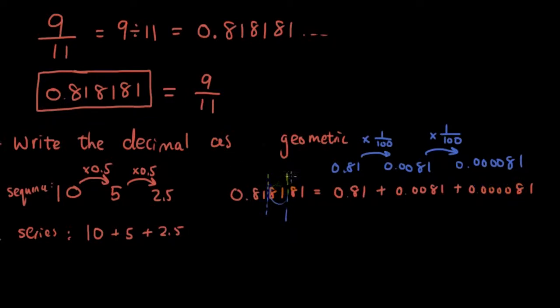This decimal number itself is a geometric series where a is equal to 0.81, which is the first term, and the ratio r is equal to 1 over 100.